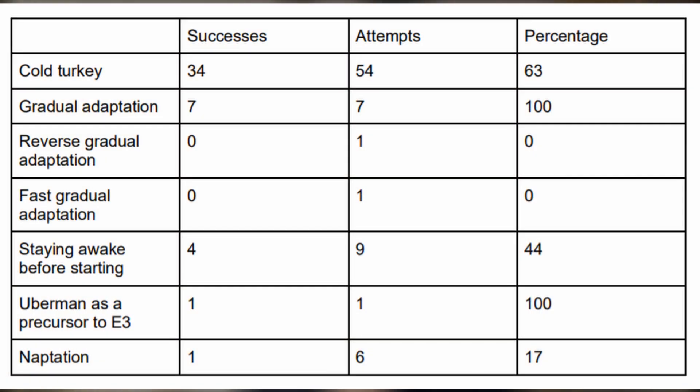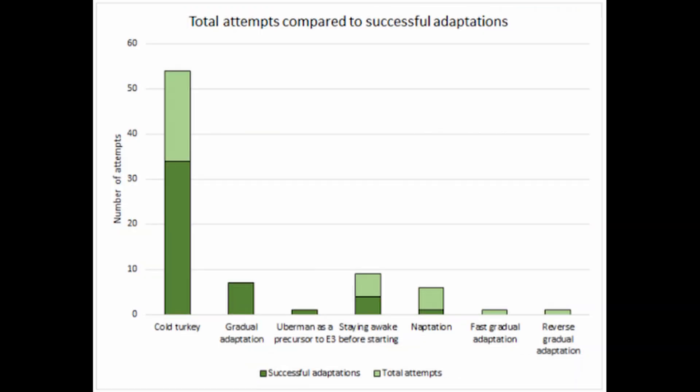Unfortunately there's not a lot of data on these methods and sample sizes are pretty small. The only method with statistics from the 2018 polyphasic survey was gradual adaptation, with a 100% success rate — 7 out of 7 people adapted successfully. None of the other methods had any recorded attempts, so we'll need to wait for the 2019 polyphasic survey to gather more data.